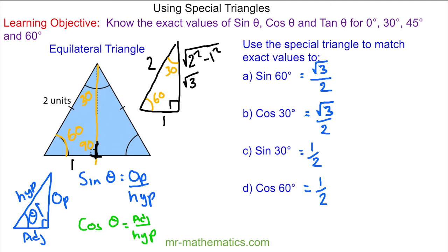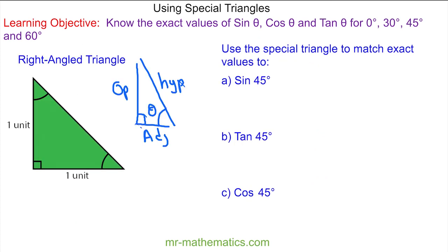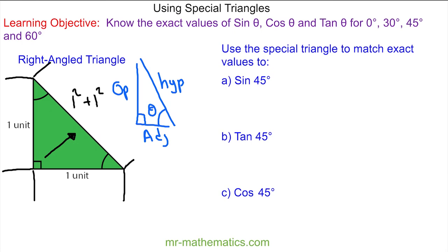Now let's move on to a different triangle — a right-angled isosceles triangle with two sides of length 1. We work out the hypotenuse using Pythagoras's theorem: the hypotenuse squared equals the sum of the squares on the other two sides, so √(1² + 1²) = √2. Now we know all three sides and can work out the values for 45°.